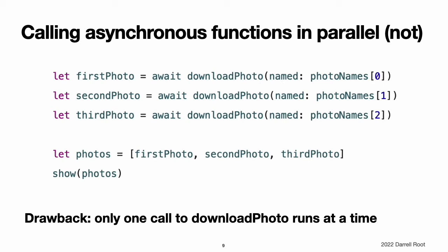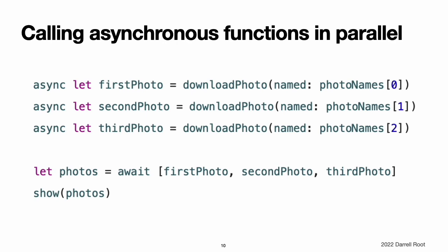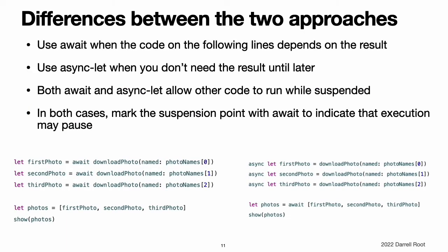Each photo downloads completely before the next one starts downloading. However, there is no need for these operations to wait. Each photo can download independently or even at the same time. To call an asynchronous function and let it run in parallel with code around it, write async in front of let when you define a constant, and then write await each time you use the constant. In this example, all three calls to downloadPhotoNamed start without waiting for the previous one to complete. If there are enough system resources available, they can run at the same time. None of these function calls are marked with await because the code does not suspend to wait for the function's result. Instead, execution continues until the line where photos is defined. At that point, the program needs the results from these asynchronous calls, so you write await to pause execution until all three photos finish downloading.